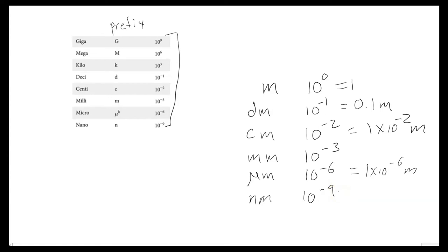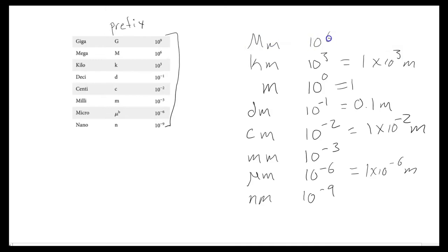Going in the big direction above the base unit meter: kilometer is 10 to the 3rd, equal to 1 times 10 to the 3rd meters; megameter is 10 to the 6th; and gigameter is 10 to the 9th, or 1 times 10 to the 9th meters. You can see that these metric prefixes are very convenient because they represent the times-10 modifier to put values into scientific notation.